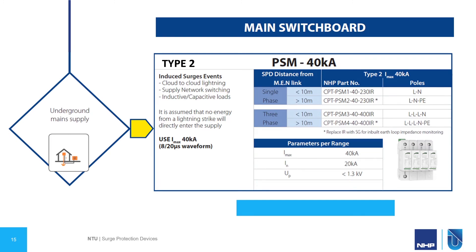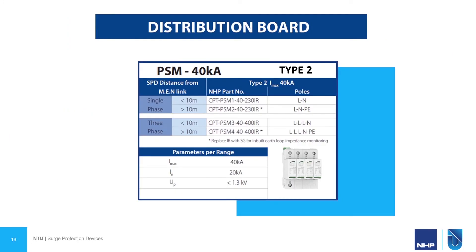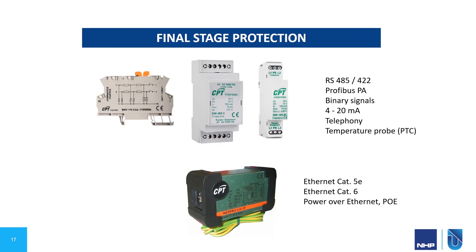So that covers the first stage of protection in our main switchboards. However, it's always recommended to have a second stage of protection in our distribution boards. This is to protect from residual surges coming from our main installation, as well as surges being induced on the cable between the main switchboard and the distribution boards, and any surges coming from switching of our loads. In this case, the PSM 40 kA Type 2 device can be used as well. For any particularly sensitive electrical equipment, there is a range of final-stage surge protection devices available, installed as close as possible to the sensitive equipment to capture the remnants of any surges on your network.